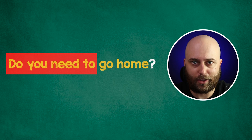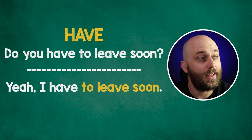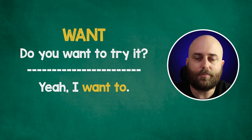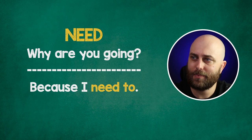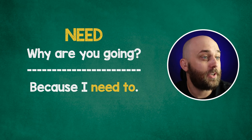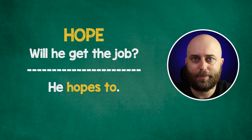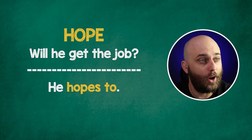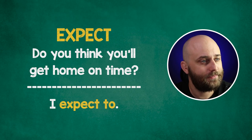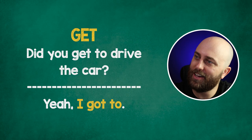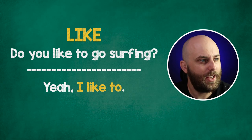You can do this with loads of verbs in English. Here are some examples: 'Have' — Do you have to leave soon? Yeah, I have to. 'Want' — Do you want to try it? Yeah, I want to. 'Need' — Why are you going? Because I need to. 'Used' — Do you like pizza? I used to. 'Hope' — Will he get the job? He hopes to. 'Expect' — Do you think you'll get home on time? I expect to. 'Get' — Did you get to drive the car? Yeah, I got to. 'Like' — Do you like to go surfing? Yeah, I like to.